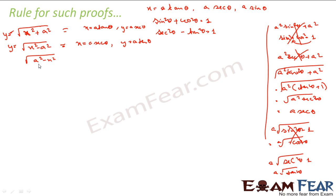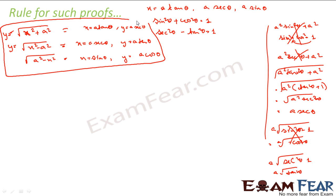For the form a²−x², if we take x = a·sin θ, then a²−x² becomes a²(1−sin²θ) = a²cos²θ, so y = a·cos θ. So for √(a²−x²), we use x = a·sin θ. The pattern is: for √(x²+a²) use tan θ; for √(x²−a²) use sec θ; for √(a²−x²) use sin θ.